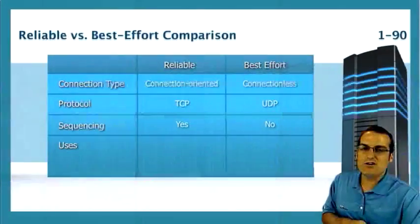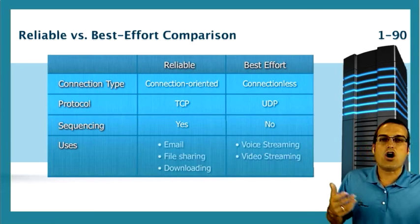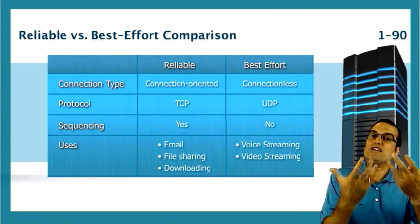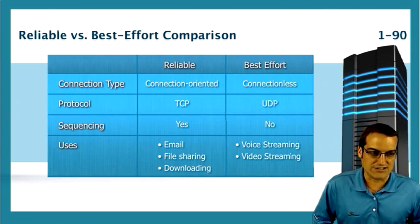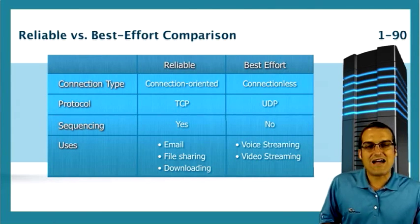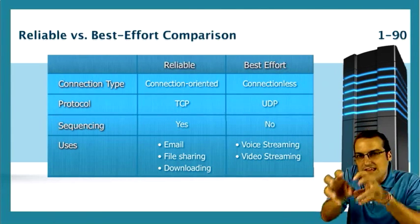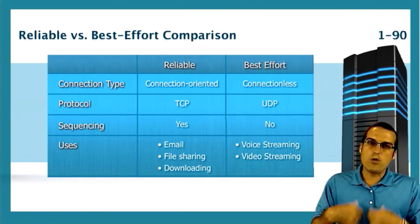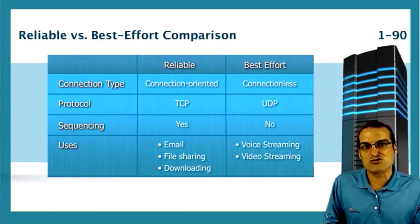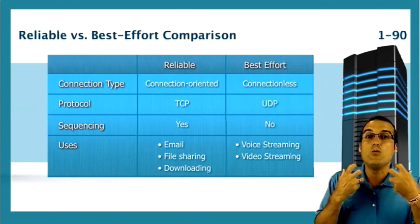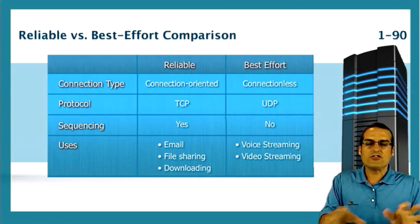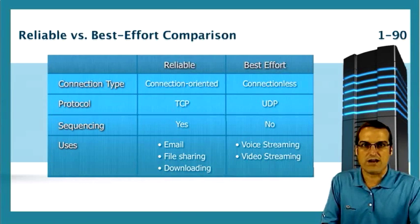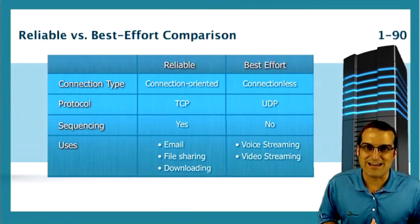So that's connectionless communications. Notice that certain applications are going to prefer or be designed to utilize either connection-oriented or connectionless. Things like email, file sharing, and download apps are going to be interested in that reliability. But when we get to things like voice streaming and video streaming, those apps want efficiency — they don't want reliability per se. We'll build in other mechanisms in the application, like buffering, to take care of the lack of reliability.